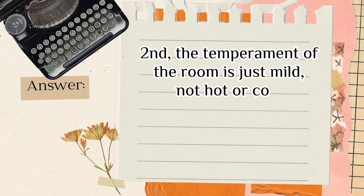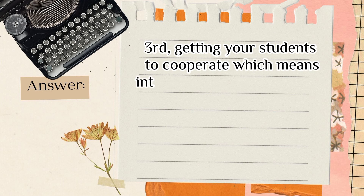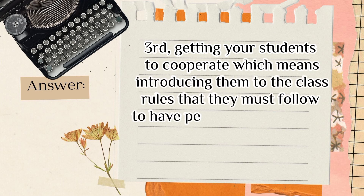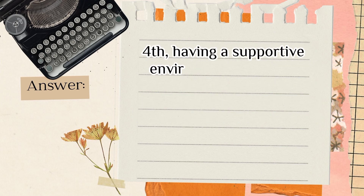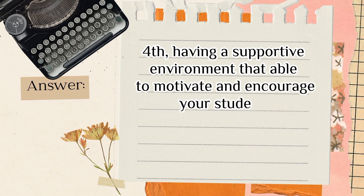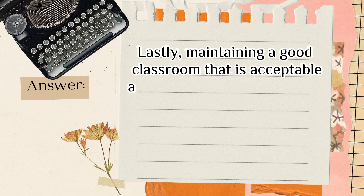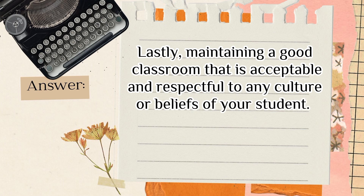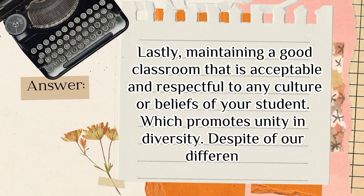Third, getting students to cooperate by introducing them to the classroom rules they must follow to maintain a peaceful environment. Fourth, having a supportive environment that is able to motivate and encourage students. Lastly, maintaining a good classroom that is accepting and respectful of any culture or beliefs of your students, which promotes unity and diversity despite our differences.